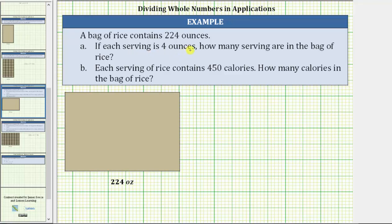To determine how many four ounce servings are in 224 ounces of rice, we need to determine how many copies of four are in 224, which means we need to divide 224 by four, or determine the quotient of 224 and four.